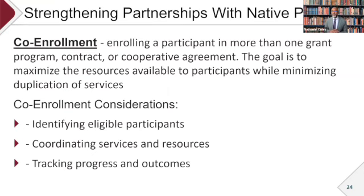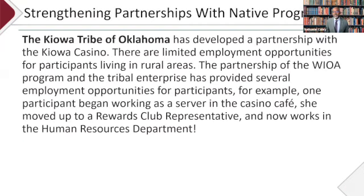Here are a couple of examples. First, on the topic of co-enrollment: the example I gave about the Alaska person in Florida illustrates how having multiple organizations support one participant improves your numbers and performance outcomes — because both organizations get to count that person as a participant since you're both supporting them under the parameters of your respective grants. Keep that in mind. The Kiowa Tribe of Oklahoma has developed a partnership with a casino on their reservation where employment opportunities are limited.